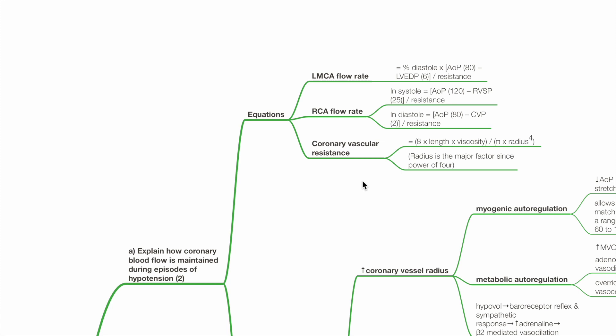Coronary vascular resistance equals 8 times length times viscosity, divided by pi times radius to the power of 4.